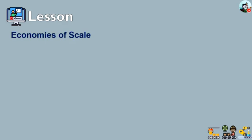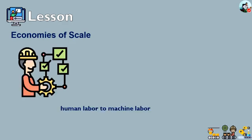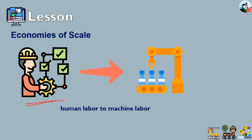A business can decide to implement economies of scale in its marketing division by hiring a large number of marketing professionals. A business can also adapt the same in its input sourcing division by moving from human labor to machine labor. If only human labor is used, there is a limited amount of output, but by using machinery or high-technology machines, there will be economies of scale.